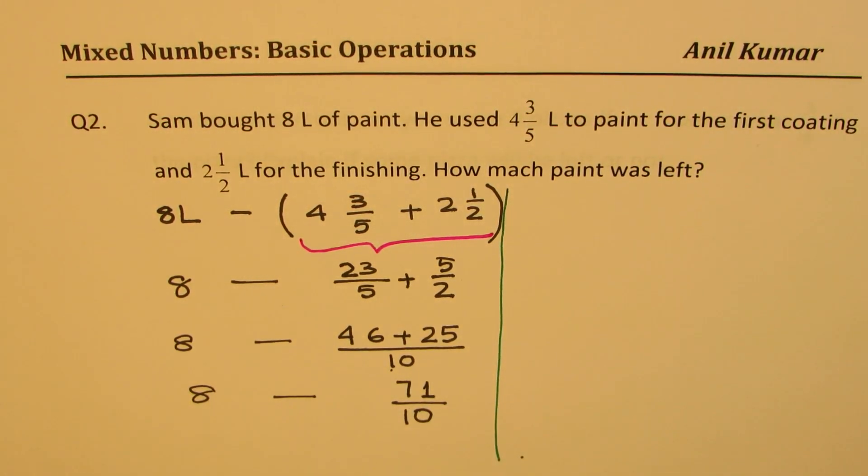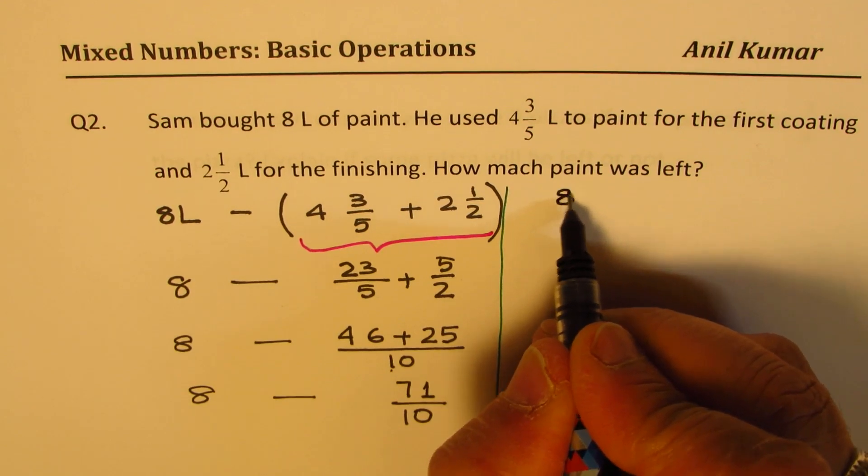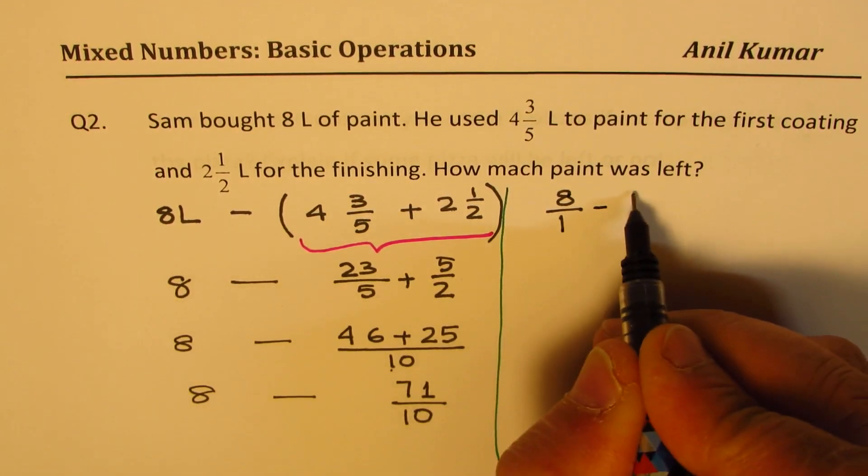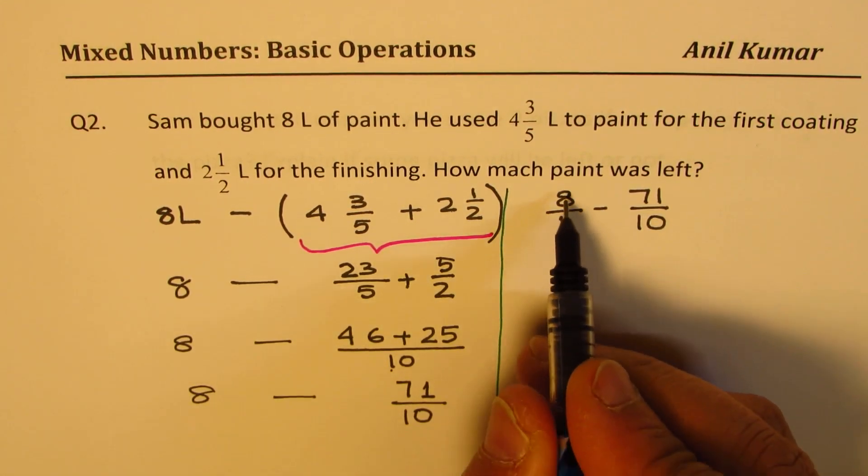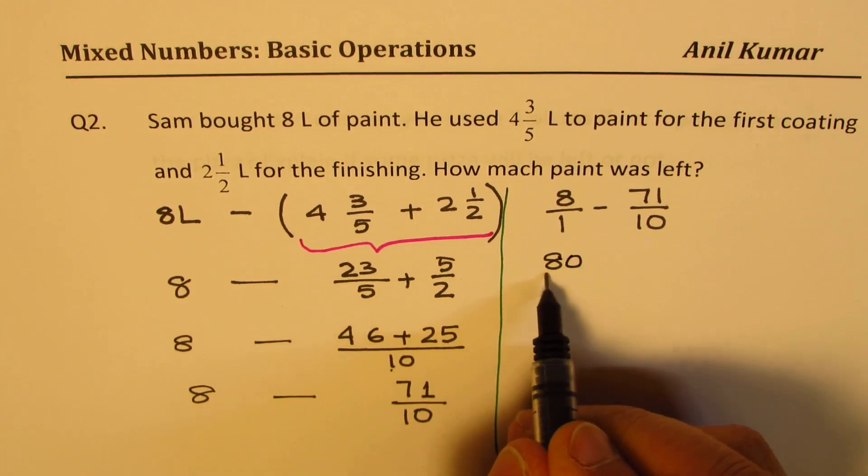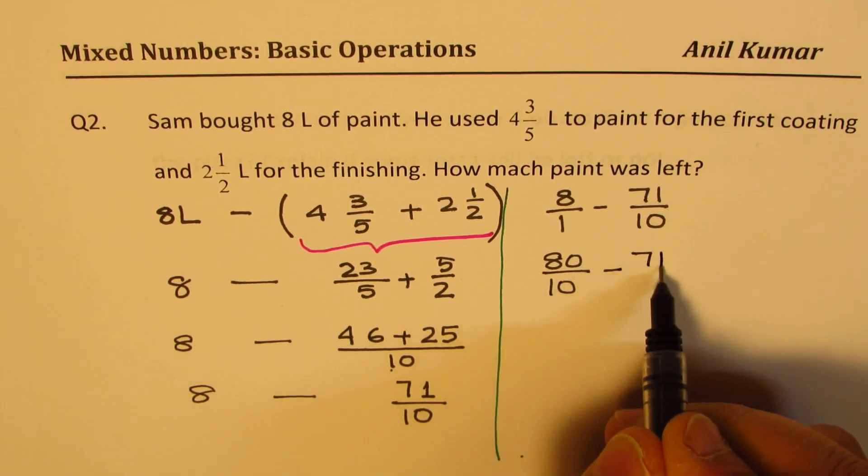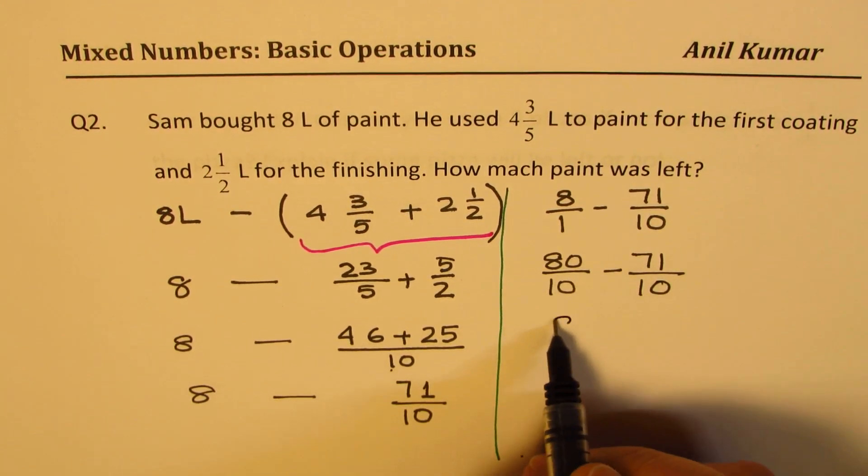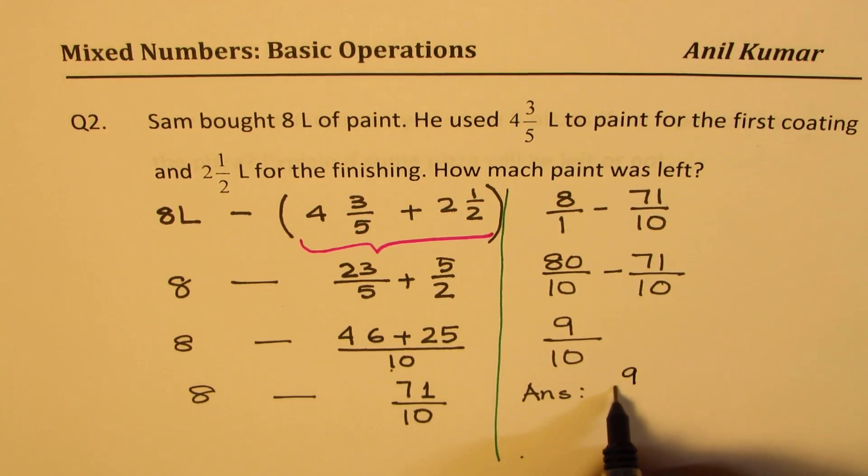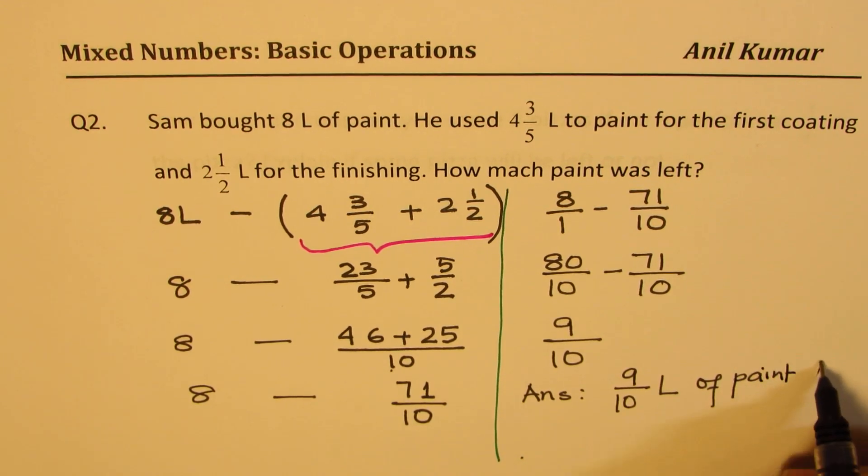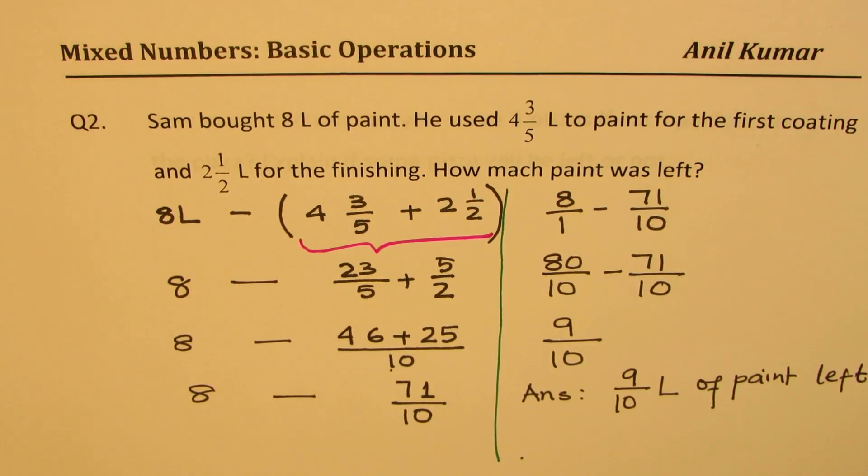Let's do it on the right side now. This time, we are actually taking away from a whole number. So 8 over 1 minus 71 over 10. To make it 10, we have to multiply both by 10. So we get 80 over 10 take away 71 over 10. So that gives you 9 over 10 as your answer. So the answer will be written with units: 9 over 10 liters of paint left.